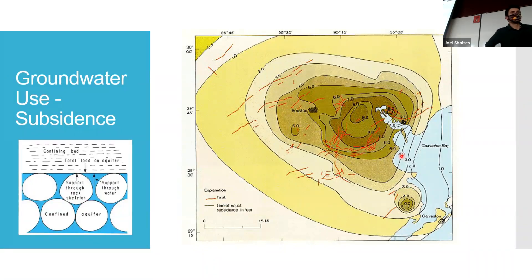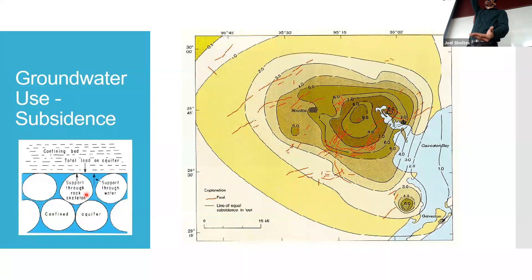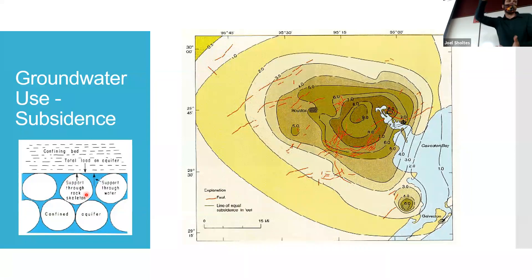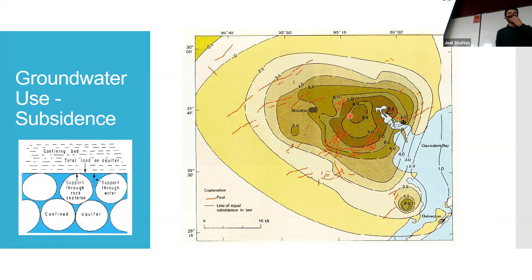Groundwater pumping can cause subsidence. This is a map of Houston, Texas. When you start draining water out of a system, especially in a confined aquifer, you can think of that water pressure as piers pushing up the confined layer. When you take that water out, the confined aquifer can be compressed and consolidate more from the weight of everything above. Houston has experienced significant subsidence and even faults as a result, causing earthquakes. This creates drainage problems — you don't want to be in areas of depression where rainwater collects. Louisiana is experiencing similar subsidence for similar reasons.